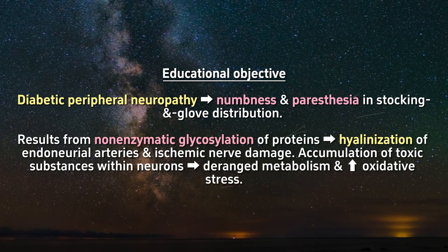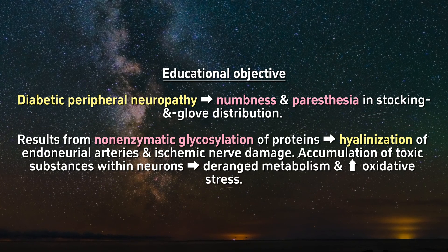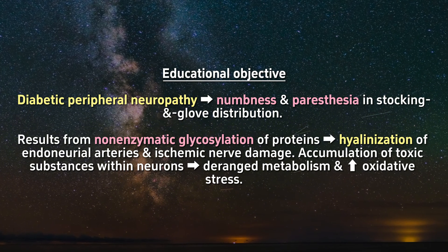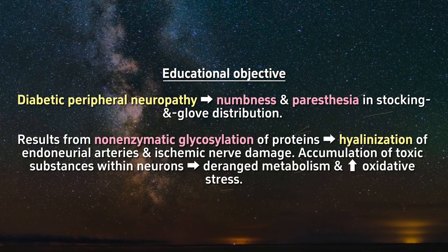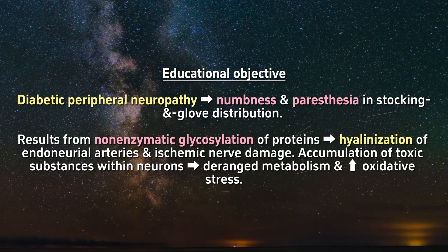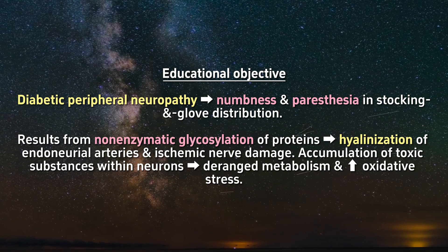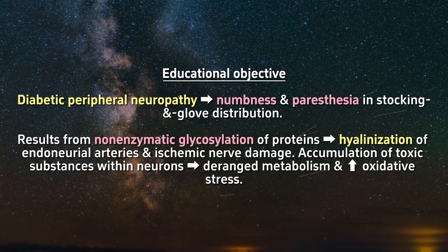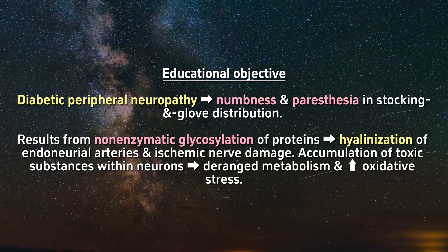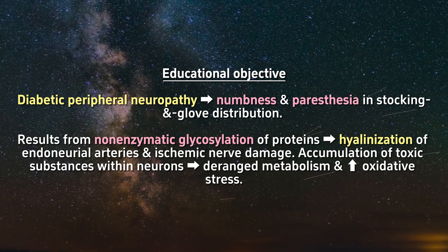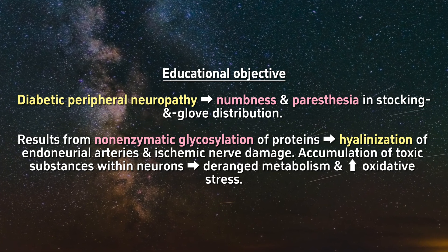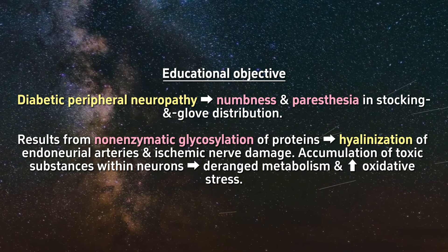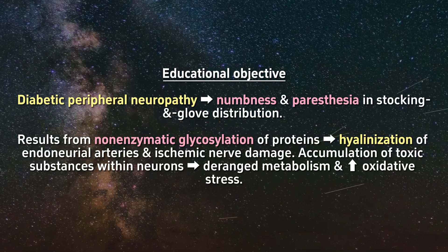Educational objective: Diabetic peripheral neuropathy is characterized by numbness and paresthesia in a stocking and glove distribution. It results from non-enzymatic glycosylation of proteins, leading to hyalinization of endoneurial arteries and ischemic nerve damage. In addition, accumulation of toxic substances within neurons results in deranged metabolism and increased oxidative stress.